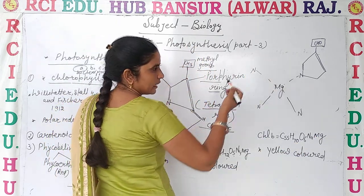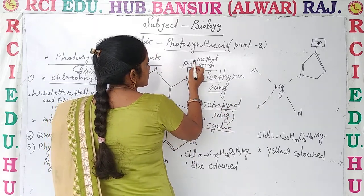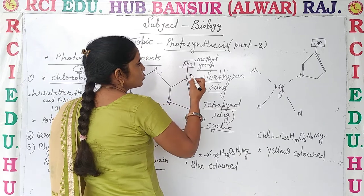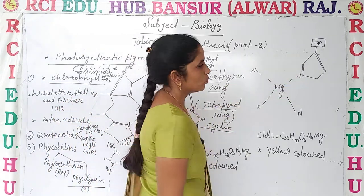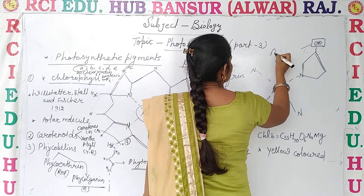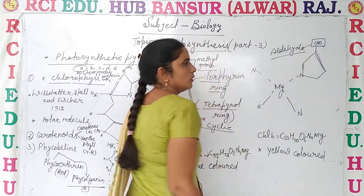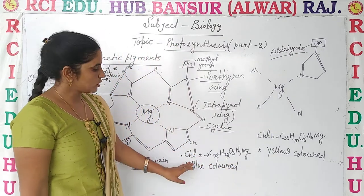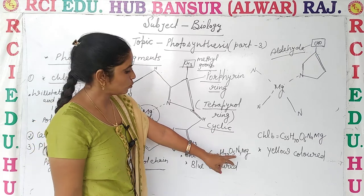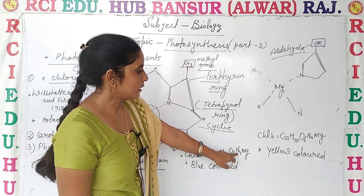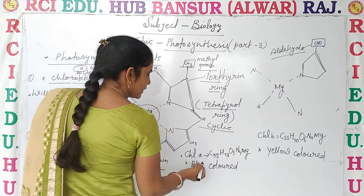In chlorophyll B, the aldehyde group is connected instead of the methyl group, so there is an increase in oxygen. The major difference is that in its pyrrole ring, a methyl group is connected in chlorophyll A, whereas an aldehyde group is connected in chlorophyll B. The formula for chlorophyll A is C55 H72 O5 N4 Mg, while for chlorophyll B it is C55 H70 O6 N4 Mg.